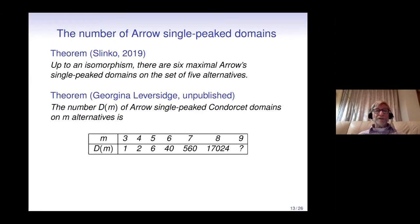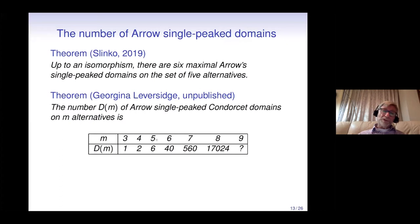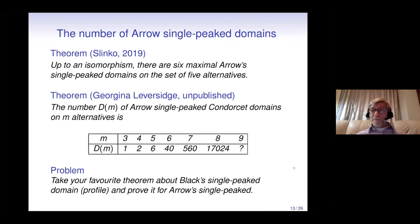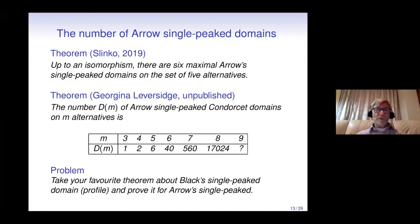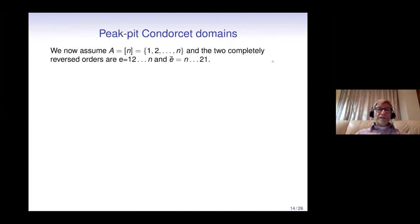The number of maximal Arrow single-peak domains on m alternatives has been calculated up to m = 8: for five alternatives there are 6, for six there are 40, and for eight there are already 17,024. Open problem: take your favorite theorem about Black single-peak domains or profiles and prove it for Arrow single-peak domains — I'm sure it will work in 90% of cases.